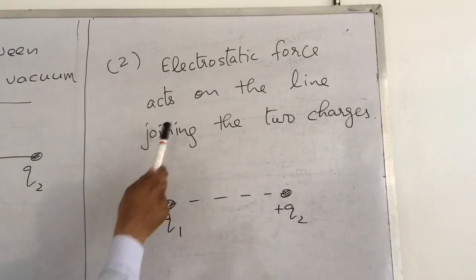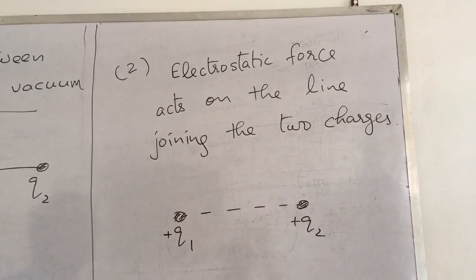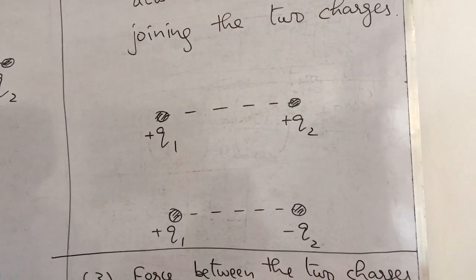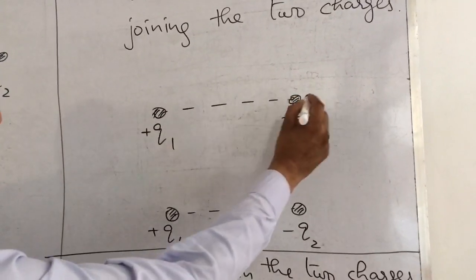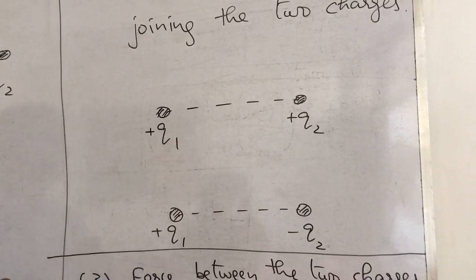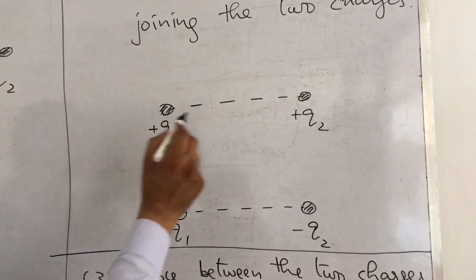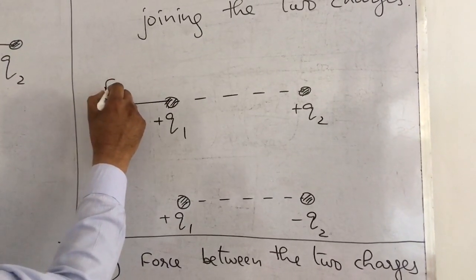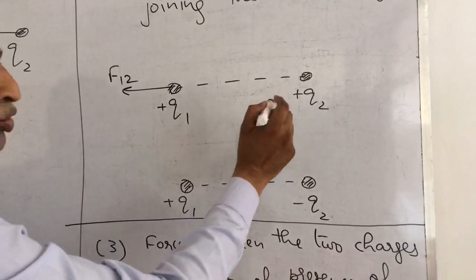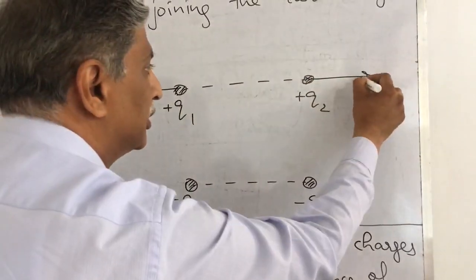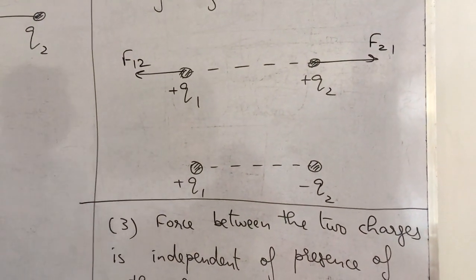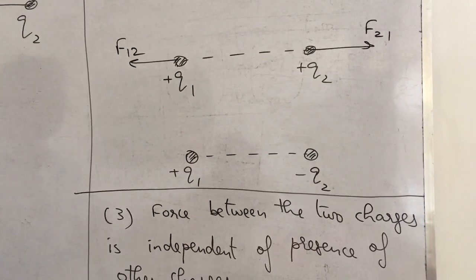Electrostatic force acts on the line joining the two charges. Take two positive charges Q1 and Q2 — both are positive. The force is on the line joining these two charges; it is a repulsive force because both charges are positive. Force on Q1 due to Q2 is in one direction, and force on Q2 due to Q1 (F21) is in the opposite direction. So it is an action-reaction pair — electrostatic force is an action-reaction pair.